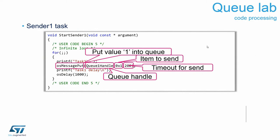Now modify the sender task: add a printf for 'task one' on the screen and put a number into the queue with a timeout using osMessagePut. The sender_one task sends the number 1 to the queue, waits one second, and repeats.